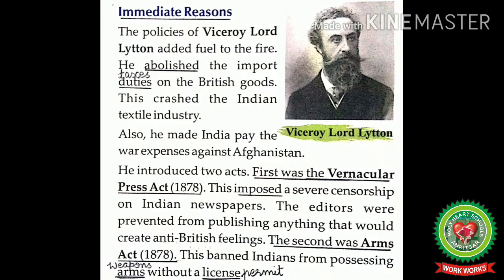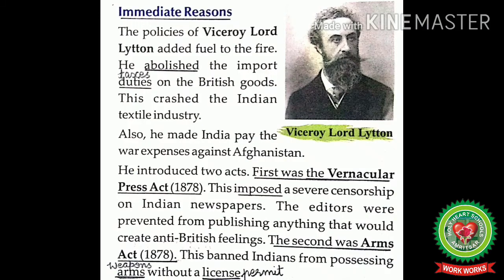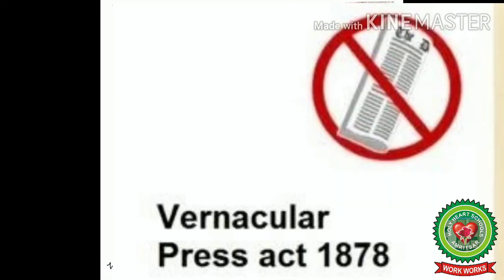The second act was the Arms Act of 1878, which banned Indians from possessing arms without a license. The British colonial rule over India helped the growth of national sentiment among the Indians. Lord Lytton, the Viceroy of India from 1876 to 1880, adopted reactionary and oppressive policies — his repressive measures acted as a catalyst for the growth of the nationalist movement. In 1878, he passed the unpopular Vernacular Press Act, denying freedom of expression to Indian newspapers.